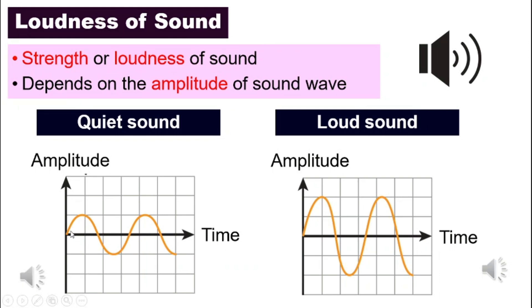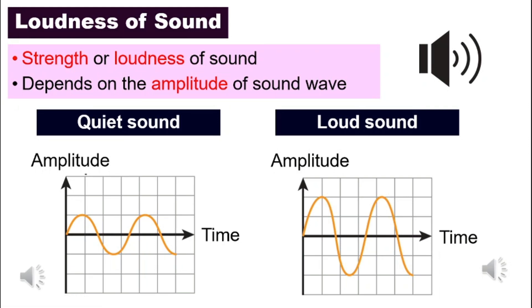For a quiet sound the graph is lower and the time does not change. The only value that changes is the amplitude. On the left hand side, the quiet sound has a lower amplitude, whereas on the right hand side a louder sound will have a higher amplitude. I will play two sound clips for you — this is a lower amplitude sound. You can hear it is very quiet and low in volume, and this is a louder or higher amplitude sound.